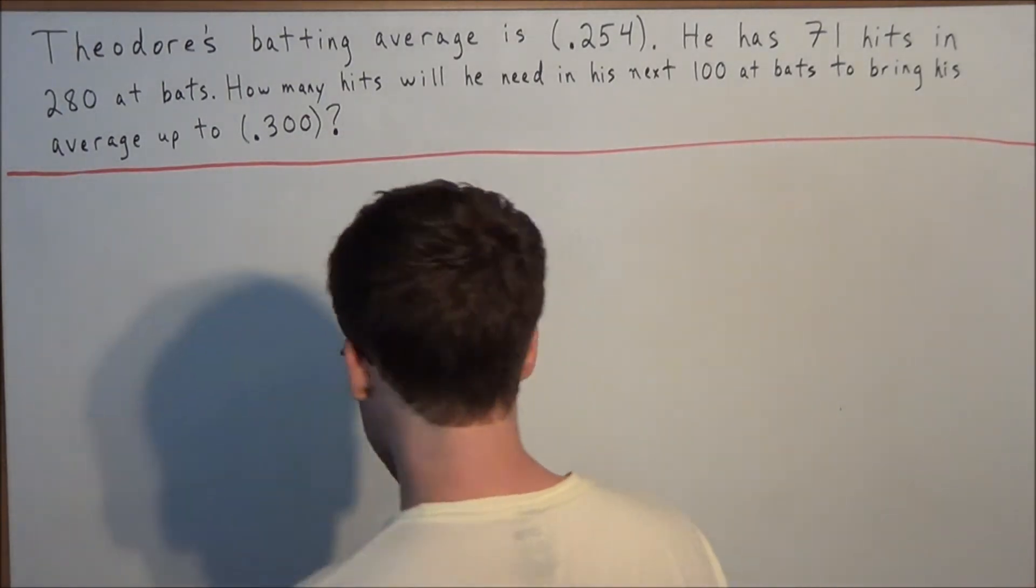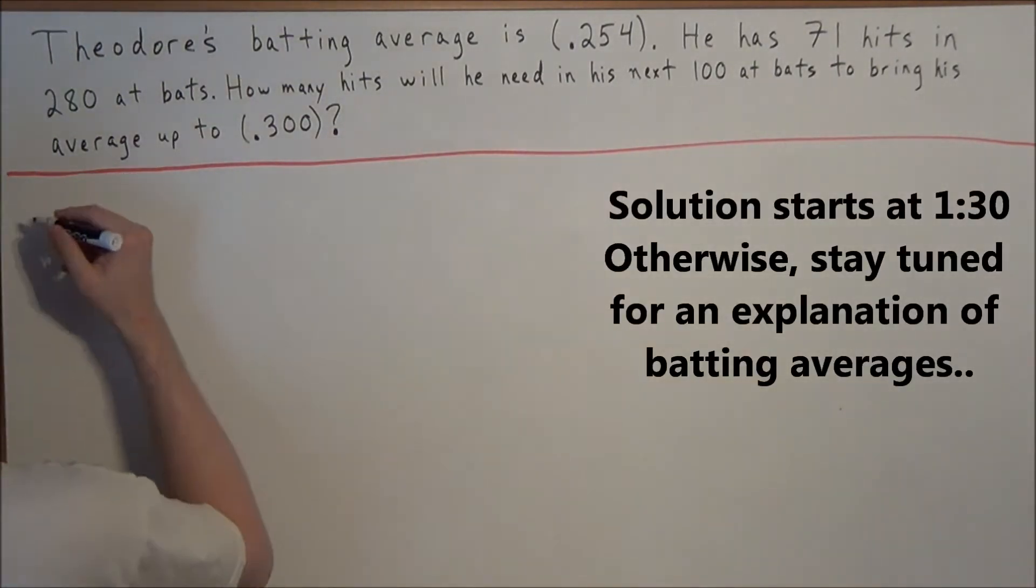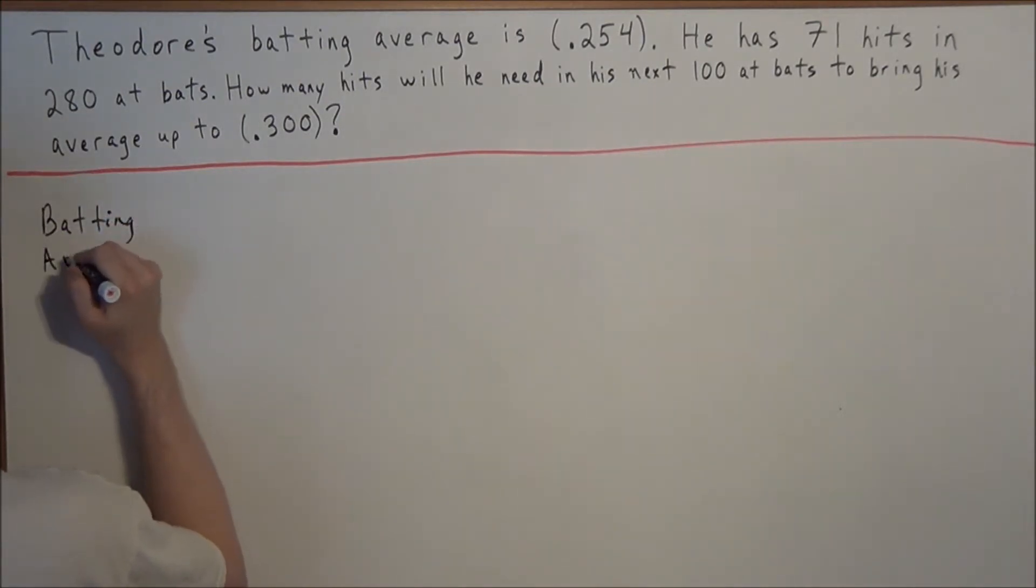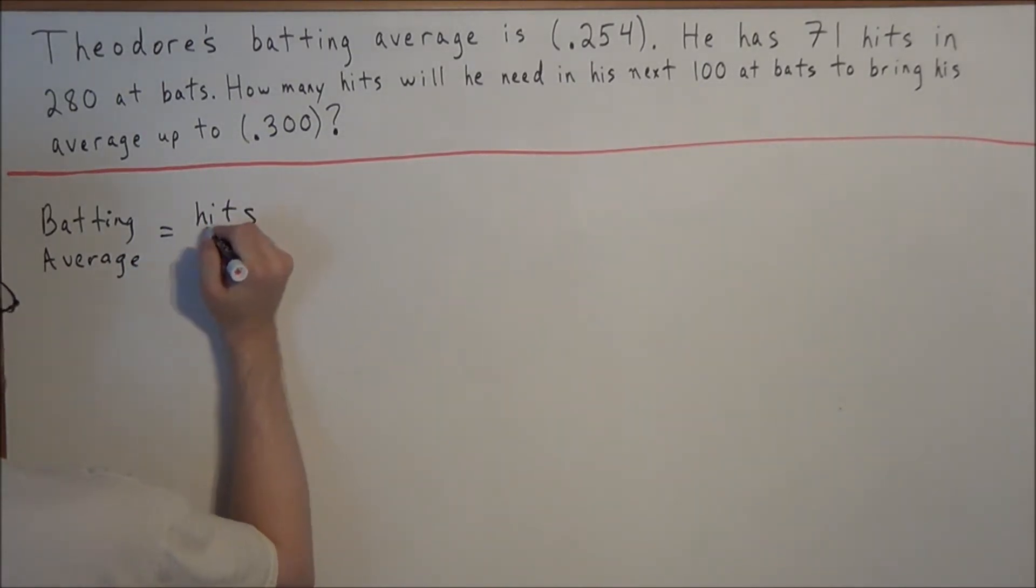For this problem, for those of you that aren't baseball fans, we look at what is a batting average. A batting average is essentially a ratio. It measures a person's hits per at bats.